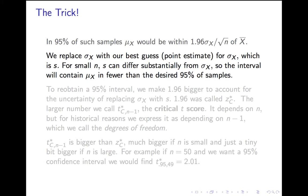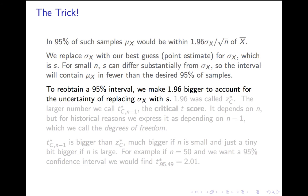So when we replace sigma with s, our interval will frequently miss the population mean — in fewer than 95% of samples it will contain the population mean. The cost of that added uncertainty is that we're not as confident. To get a 95% confidence interval, we have to make that interval bigger. To pay for replacing sigma with s, we have to make the number 1.96 bigger.